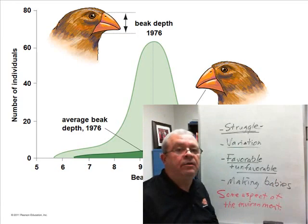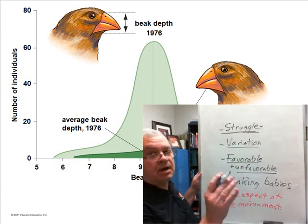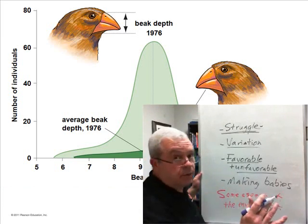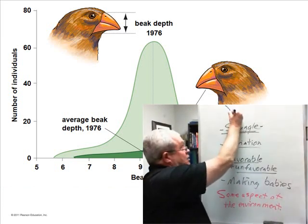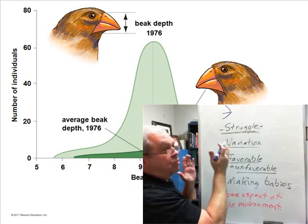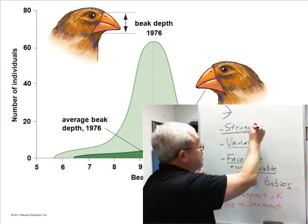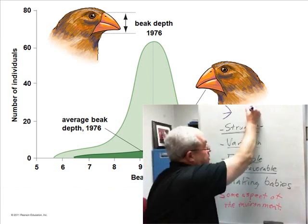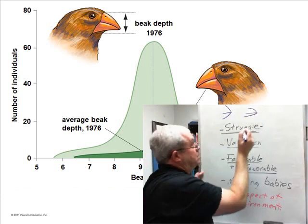What criteria are used to designate different species of finch? Well, the only one we'll talk about, because it's the only one I know, is beak depth. Some finch species have shorter but stouter beaks. Others, to exaggerate quite a bit, had beaks that were a little longer and more slender.